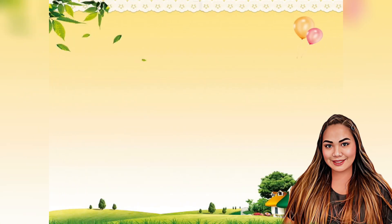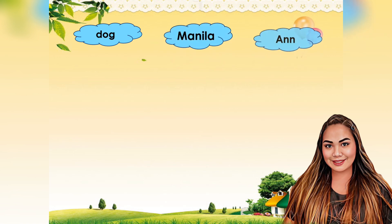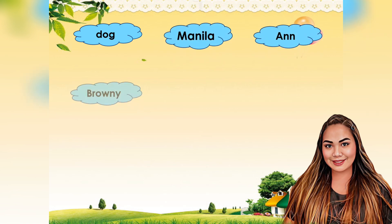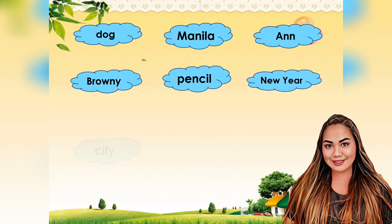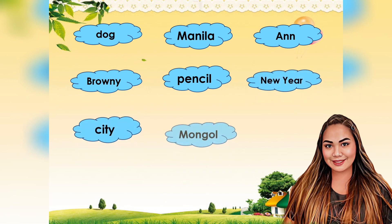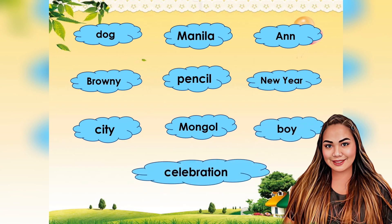Here are some examples: Dog, Manila, Anne, Brownie, Pencil, New Year, City, Mongol, Boy, Celebration.